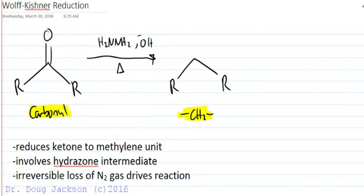Let's look at the Wolff-Kishner reduction. The Wolff-Kishner, like the Clemmensen reduction and the Mozingo reaction, reduces a carbonyl to a methylene unit or CH2. We're going to involve a hydrazone intermediate, and the irreversible loss of nitrogen gas is what drives this reaction to completion.